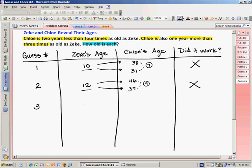So maybe I would try 5. If Zeke is 5, the first clue says Chloe is 2 years less than 4 times that age. 4 times 5 is 20, minus 2 is 18. And in the second clue, Chloe is 1 year more than 3 times that. So 5 times 3 is 15, plus 1 is 16.